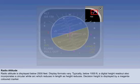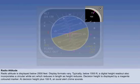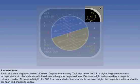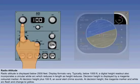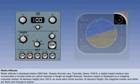The selected decision height is displayed by a magenta-colored marker on the circular white arc. At decision height plus 100 feet, an all-alert chime sounds. At decision height, the magenta marker and white arc will flash and change to yellow, and the alert tone ceases. Pressing the DH-RST button will cancel the alert chime and the marker flashing, and will also change the decision height displays back to their normal color.